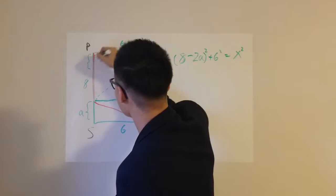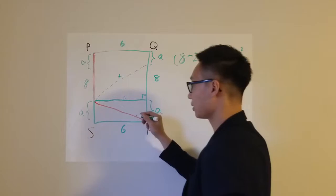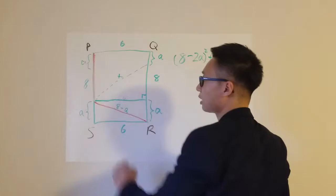So this length, this diagonal right here, the red diagonal is simply 8 minus 1a, because this length is 8, the whole length minus 1a.